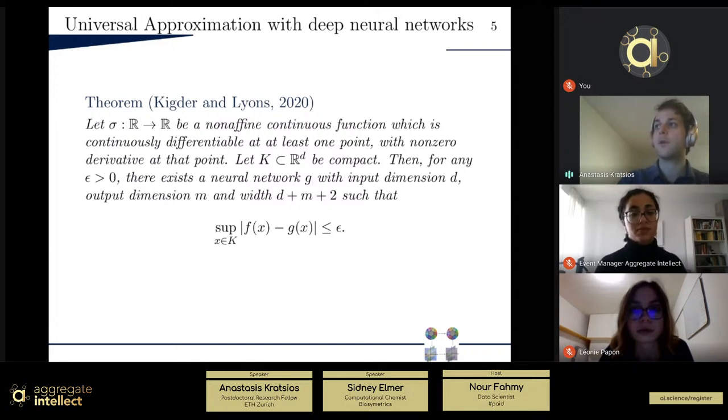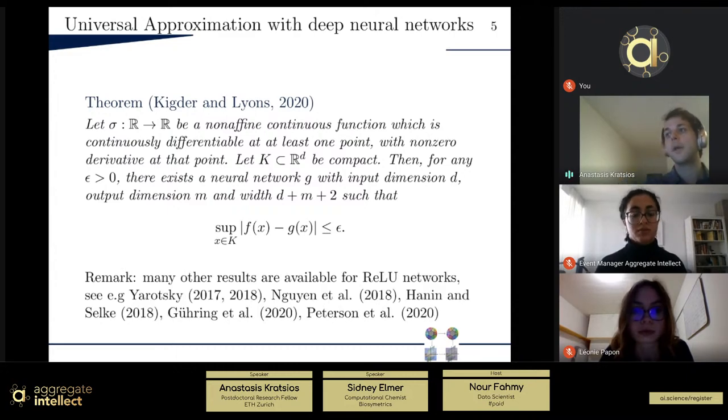whose width is at least this quantity here, so the dimension of the input space and dimension of the output space plus two, then you can get the analogous approximation guarantee. In other words, for any target function, you can approximate it to arbitrary precision on an arbitrarily large but still compact subset of your input space. And so you mentioned that there's many other authors who look at variants of this, so different topologies and different notions, refinements in some ways.